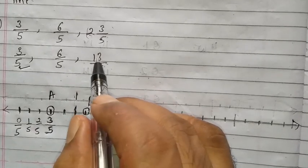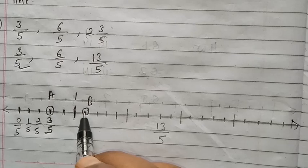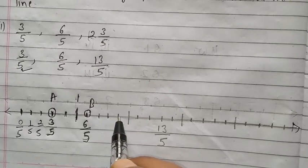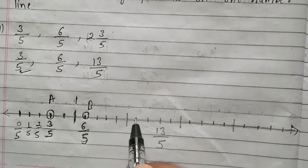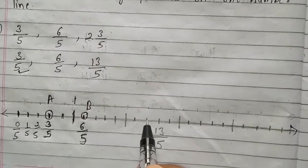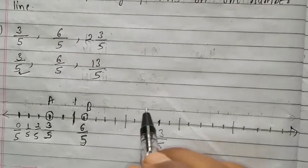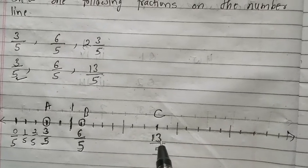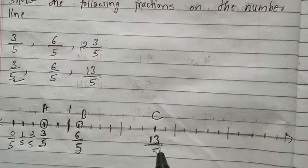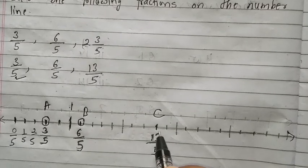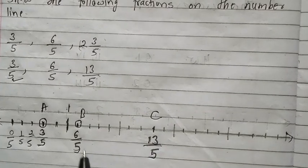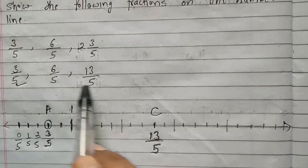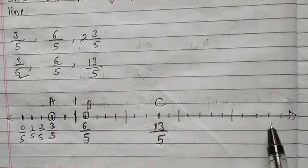Next, what is given? 13 upon 5. So count: this is 6, next 7, 8, 9, 10, 11, 12, 13 — so this point is showing 13 upon 5, point C. This is the way we have to show fractions on the number line.